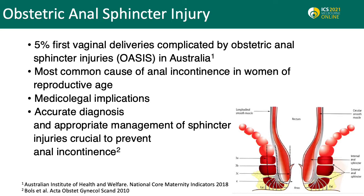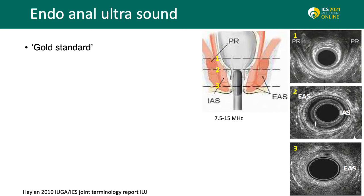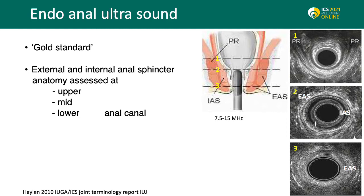Accurate diagnosis and appropriate management of sphincter injuries is crucial to prevent anal incontinence. Endoanal ultrasound is considered the gold standard when assessing the obstetric anal sphincter complex and correlates with symptoms of anal incontinence.